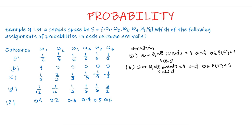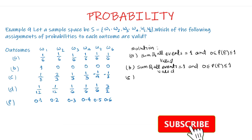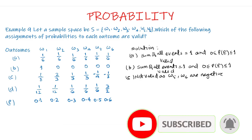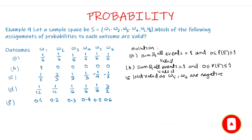For Part C, we observe that the probabilities of ω5 and ω6 are negative. Since the probability of every event must be between 0 and 1, and these values are negative, this assignment is not valid.